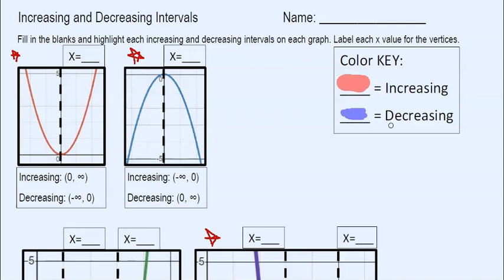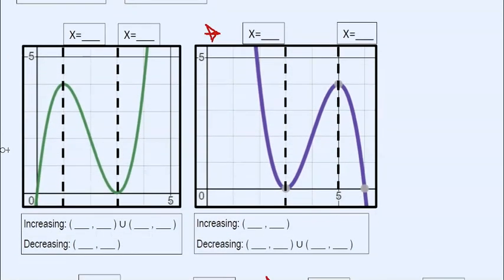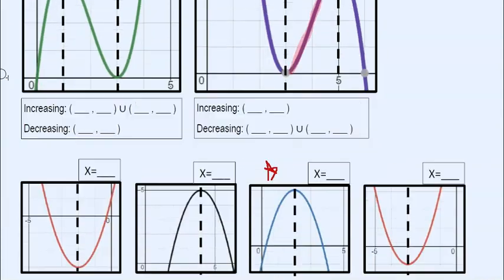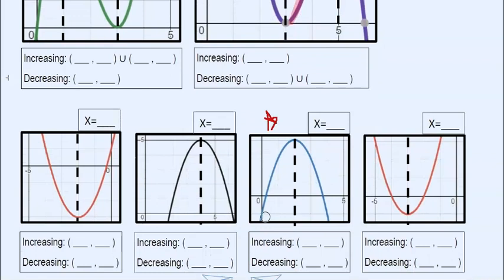So let's highlight all the increasing intervals on this whole entire page. So it looks like it's increasing here. It's increasing right here. It's increasing on this one right here. And it looks like it's increasing on this one. Now pause the video and highlight the rest of the increasing intervals on this page.